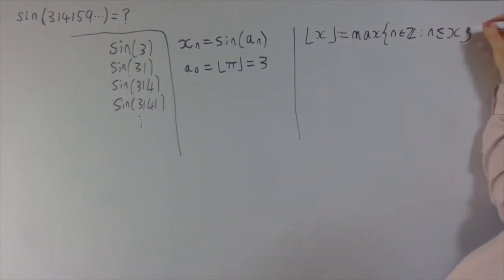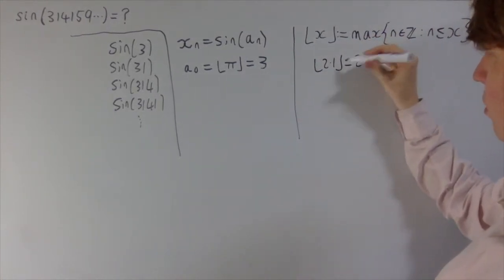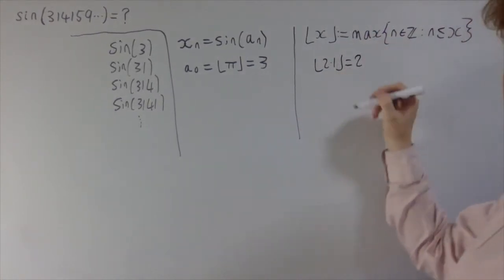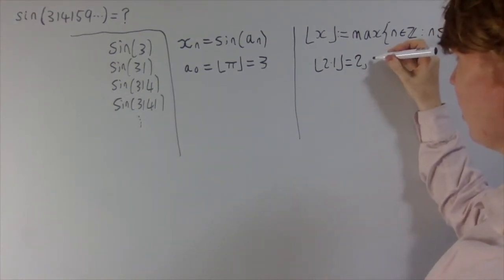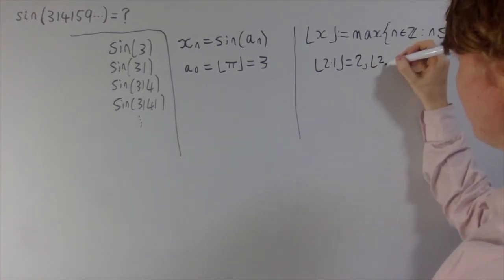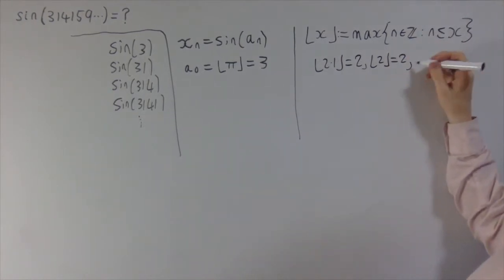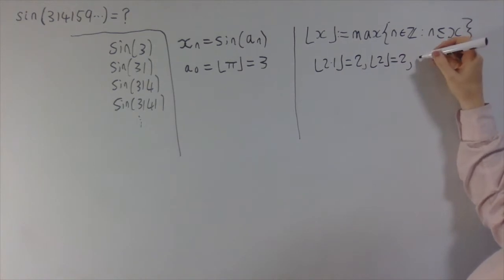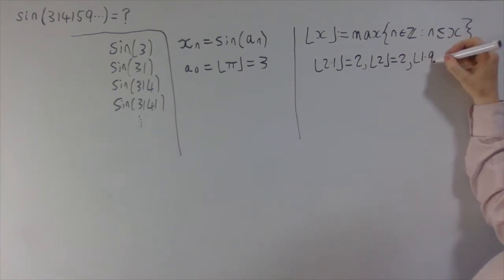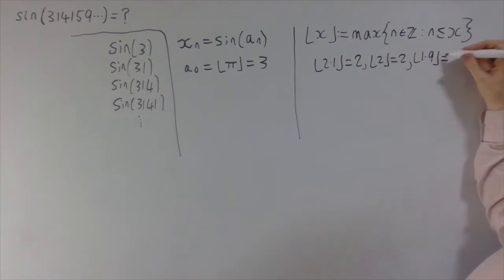A couple of examples: the floor function of 2.1 gives you 2 — you truncate away all the decimal parts and just look at the whole number. A whole number gives itself back, so floor(2) = 2. And floor(1.9), instead of rounding up to 2, rounds all the way down to 1 — you chop off the decimal part.